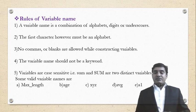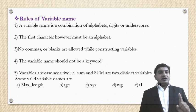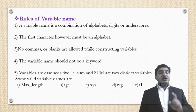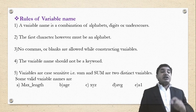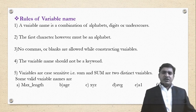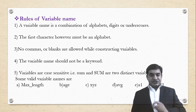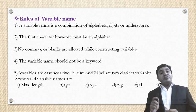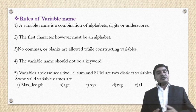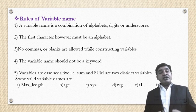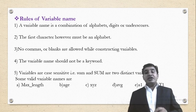Some valid variable names are: maximum_length — valid because the first letter is an alphabet and underscore is allowed. 'age' is a valid variable name. 'xyz' is also a valid variable name. 'average' is also a valid variable name. 'a1' is a valid variable name because numbers are also allowed. 't1' is also a valid variable name.